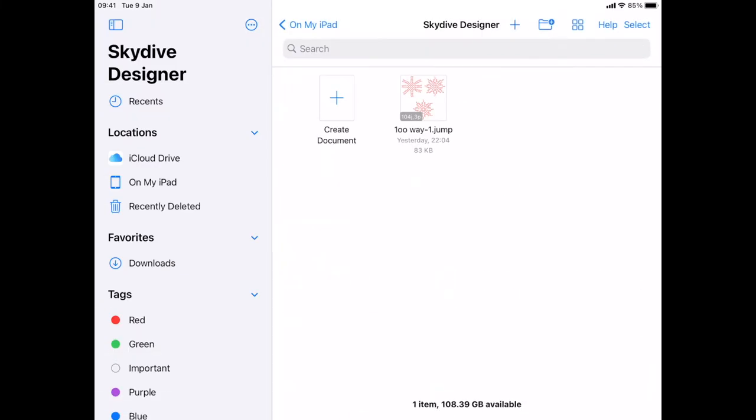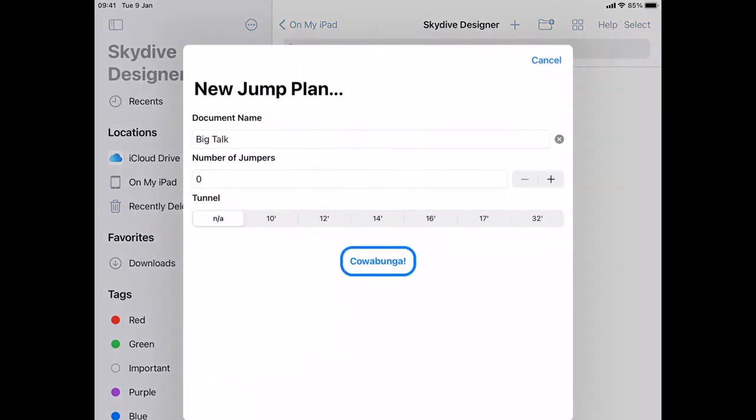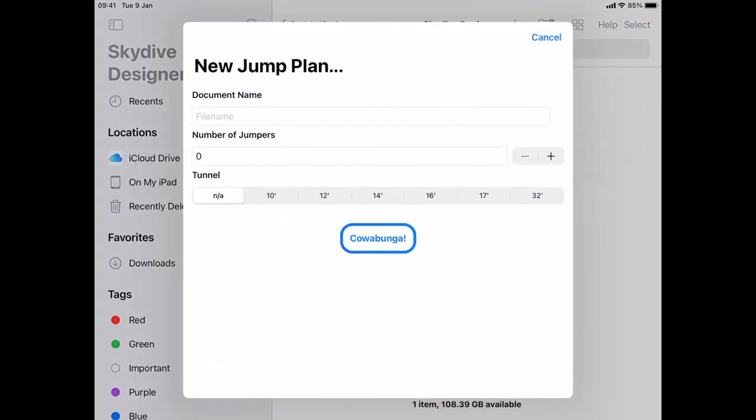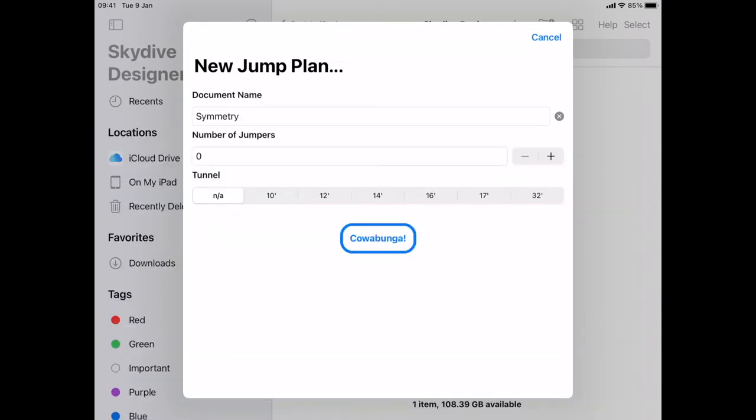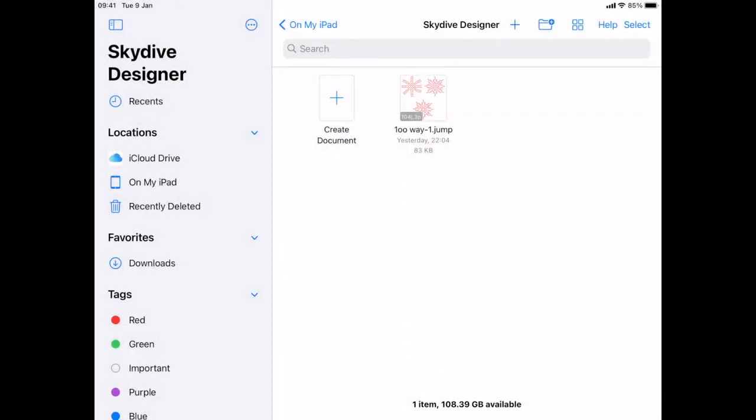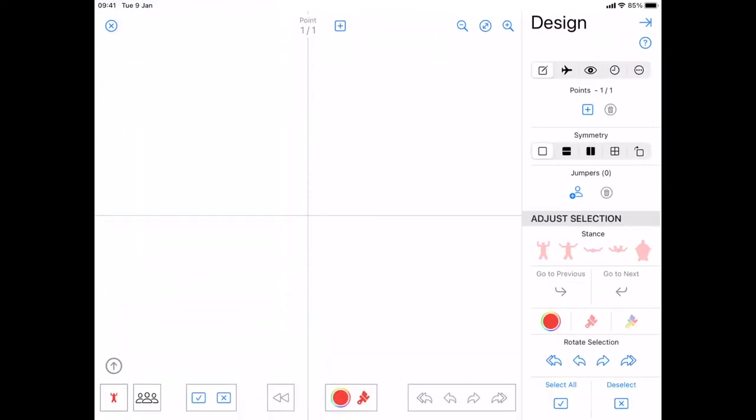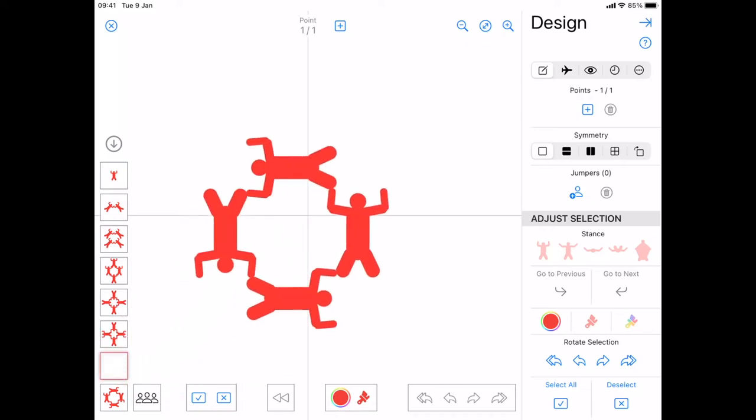So I'm going to create a new document. I call it symmetry. And I'm going to start with no jumpers and no tunnel. Okay, so bring up my jump selector. The first thing I've got in the centre is that doughnut.